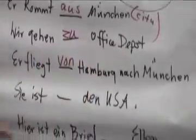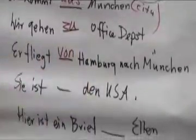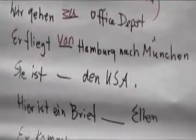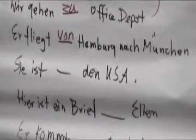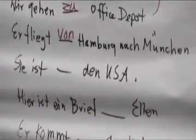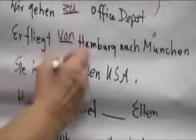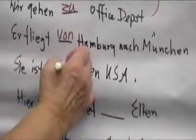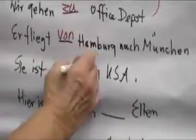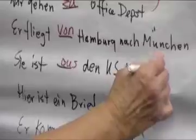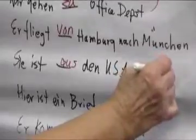Sie ist ___ USA — she is from the United States. What do you put in here? Aus, because we are talking about a country. She is from a country.